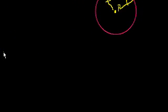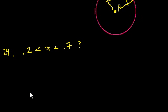Problem 24. The problems are getting a little bit more interesting. Problem 24. Is the number x between 0.2 and 0.7? So if I just write it, 0.2 is less than x, which is less than 0.7. That's what they want to know.